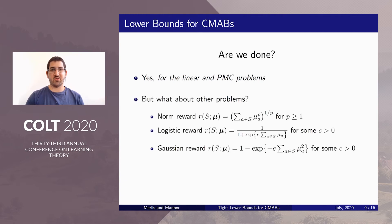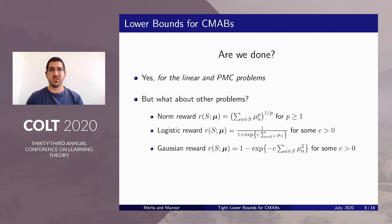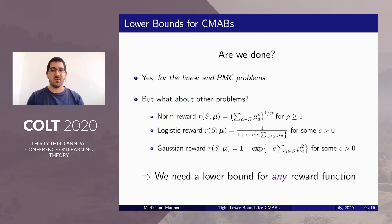But what about other reward functions — a null function, a logistic function, or maybe even a Gaussian function? We have no idea if we're done or not because we have no lower bounds for this problem. Until we have more general lower bounds, we don't actually know if the upper bounds are really tight or only tight for specific instances. So in this work, we aim to close this gap and derive general lower bounds under the mildest assumptions possible.